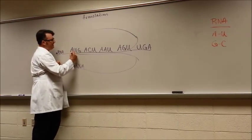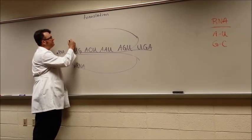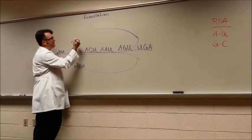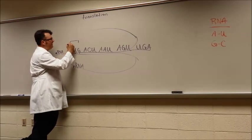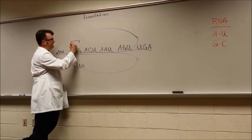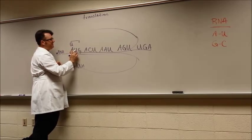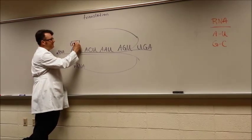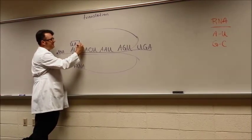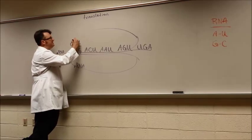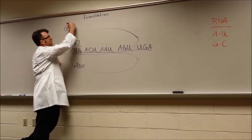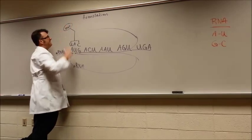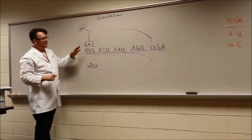The codon here is going to match the anticodon on the transfer RNA. So if the codon is A, what is the anticodon going to be? U. And if it's U here what's this one going to be? A. And what matches with G? C. So this is going to bring methionine over to the ribosome.